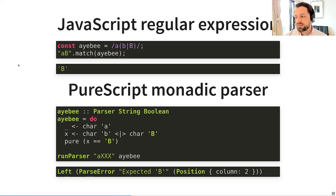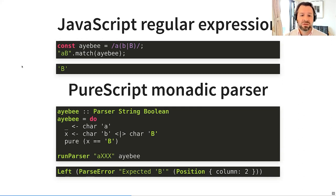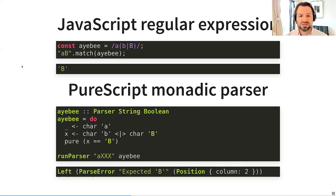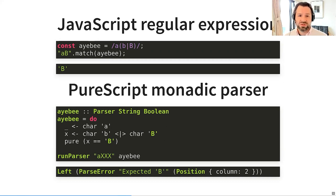Recall that a monadic parser needs three features: the state of the current position in the input string, alternative, and failure. Let's see what happens when the ab parser fails. We give it an illegal string 'axxx' and instead of returning right with a Boolean data structure, it returns left with a description of the error at a position. The error says it failed because it was expecting a 'b' character at position 2.